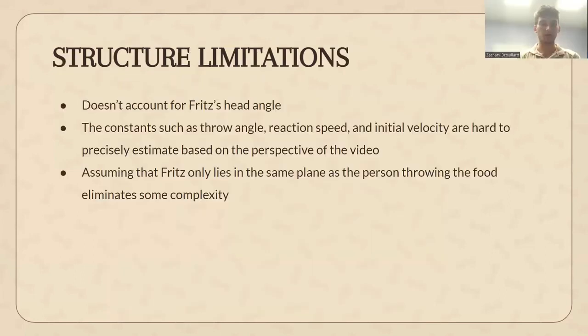Now in terms of structural limitations, first this model does not account for the motion of Fritz's head outside of the plane of his owner throwing the food. While it is useful to reduce Fritz and the food to two dimensions, it does eliminate some complexity which could be useful in more actively modeling the situation. When the food is thrown more sideways relative to Fritz, there is an additional degree of difficulty added where Fritz must pivot his body that is not accounted for in this model. On top of this, multiple values were taken from a frame-by-frame analysis of the video, which is of course a limited perspective and cannot be as accurate as having physical measurements. In the future, we would also look to incorporate a third axis into our motion model, making it three-dimensional, which would allow for a more accurate simulation of motion.